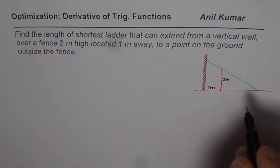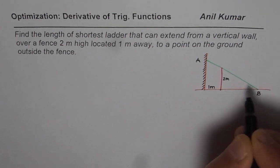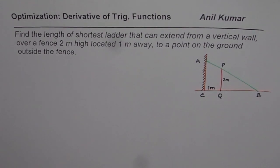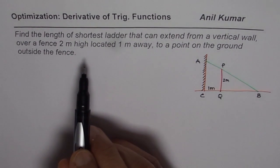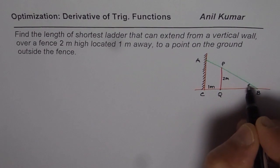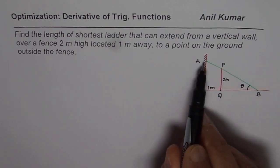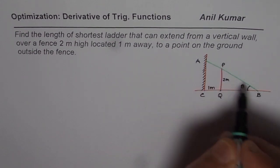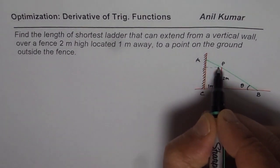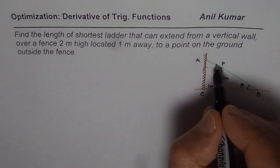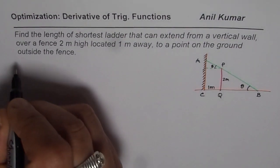Let's say points A and B represent the endpoints of the ladder, and let's call the top of the fence point P, with C labeling the base. Now we need to find the shortest length of this ladder. Let this angle be theta, so we can write a relation in terms of theta for the length of the ladder. If I draw a line parallel to the base, I get angle theta there as well.